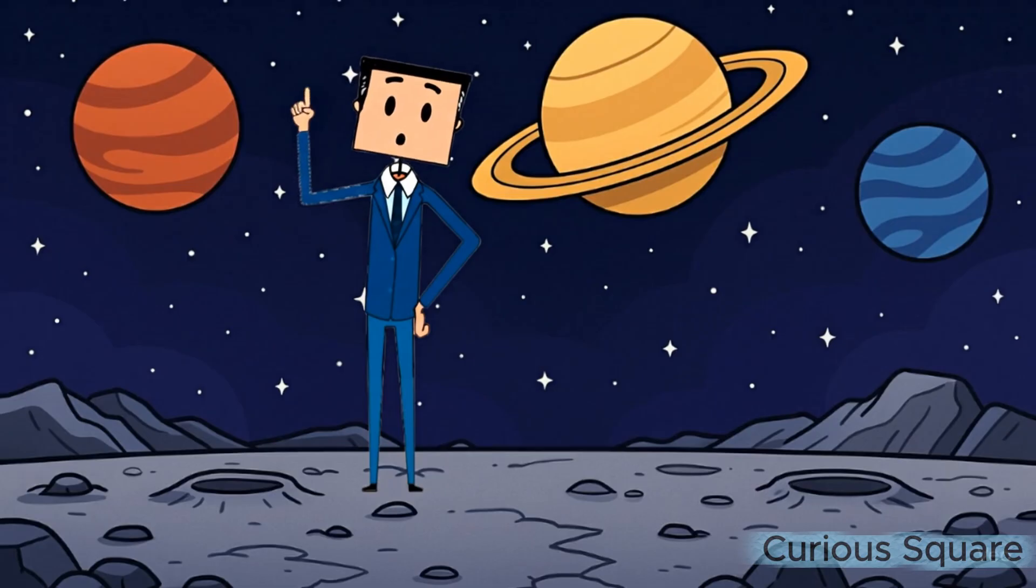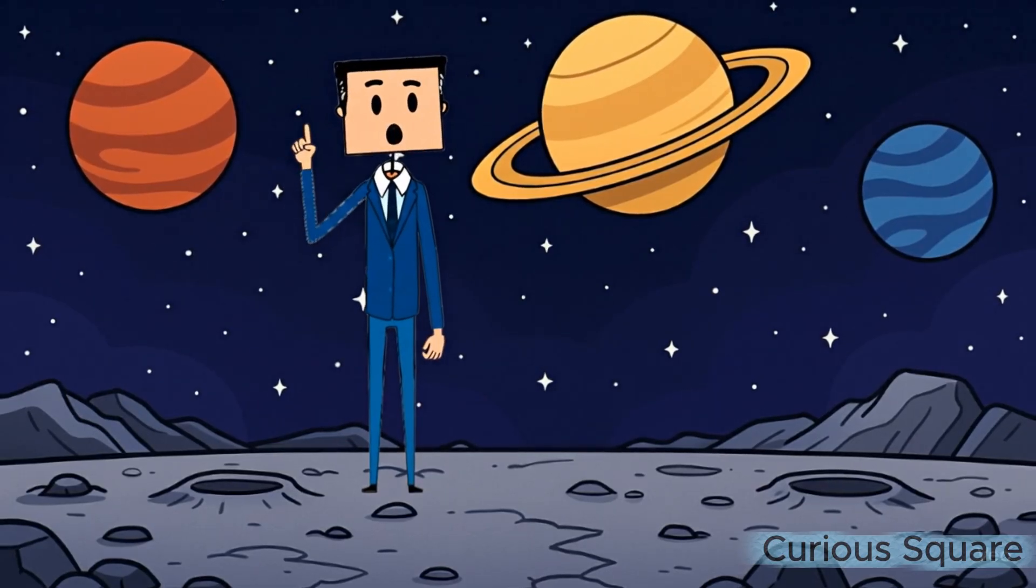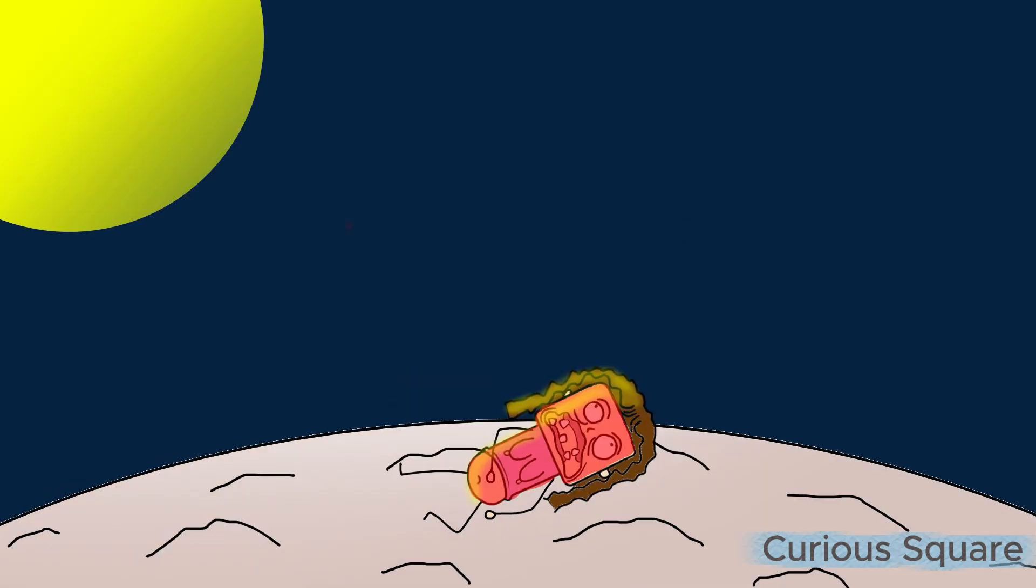This extreme imbalance happens because Mercury does not have a proper atmosphere to regulate temperature. Instead, there is only a very thin exosphere, incapable of retaining heat.